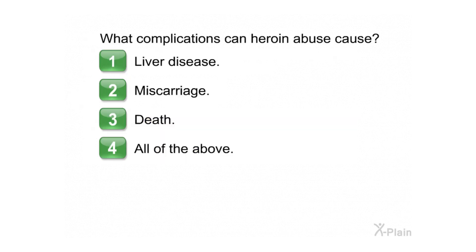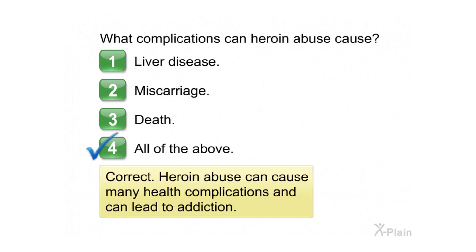What complications can heroin abuse cause? Choose one of the following: 1. Liver disease. 2. Miscarriage. 3. Death. 4. All of the above. Correct. Heroin abuse can cause many health complications and can lead to addiction.